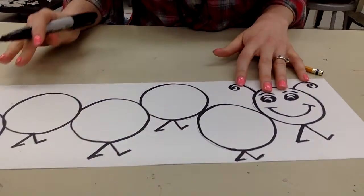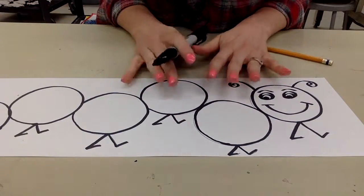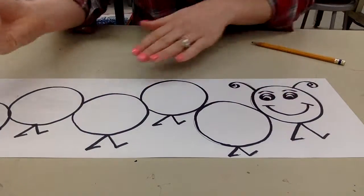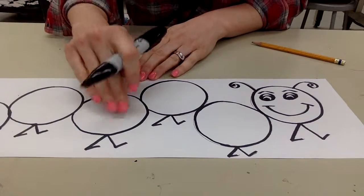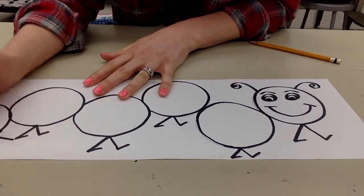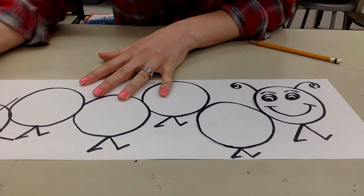The last part is making that visual texture of the hair on the caterpillar. So you're going to go on each circle besides the head. And you're going to make lines coming off of the circle.